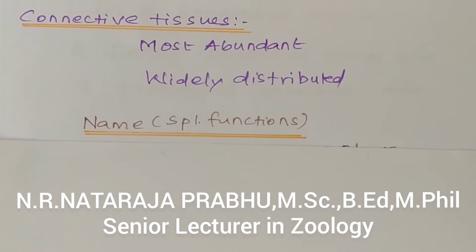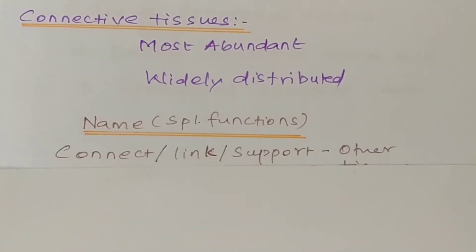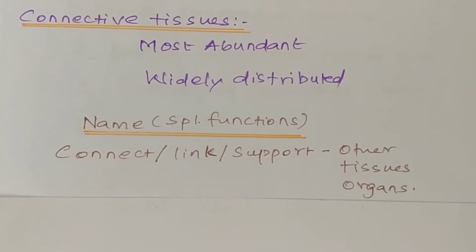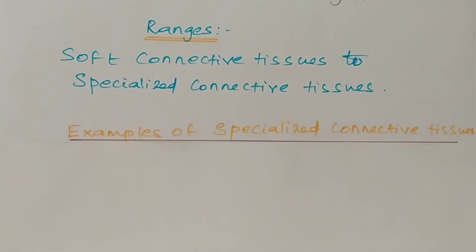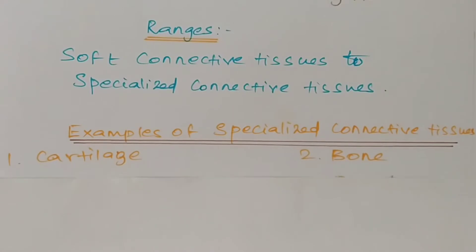The name itself suggests a special function — it connects or links, and supports other tissues or organs. The connective tissue connects one tissue to another tissue, or one tissue to another organ, or one organ to another organ. That's why it is named connective tissue. It ranges from simple connective tissue to specialized connective tissues. Some examples are cartilage, bone, adipose tissue, and blood.